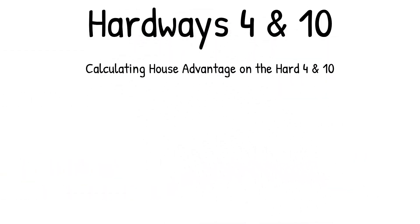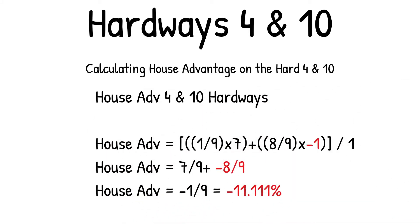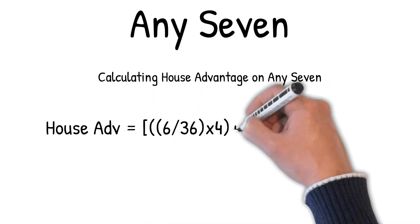Calculating house advantage on the Hard 4 and 10: house advantage equals one out of nine chances to win times the seven dollar win, plus eight out of nine times minus one dollar. Add that up and divide by a one dollar bet: seven over nine plus minus eight-ninths equals minus one-ninth, which equals minus 11.11% house advantage.